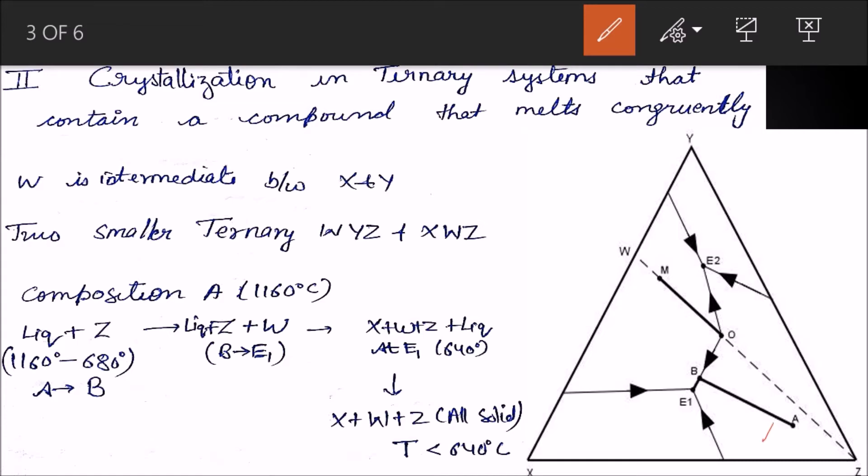This is composition A at 1160 degrees Celsius. Now as crystallization starts and it cools, it will move towards B. As it moves towards B, it will start precipitating Z. From A to B, Z will start precipitating. When it reaches point B, it will start moving towards E1, which is the eutectic. At B, W will start precipitating as it moves towards E1.